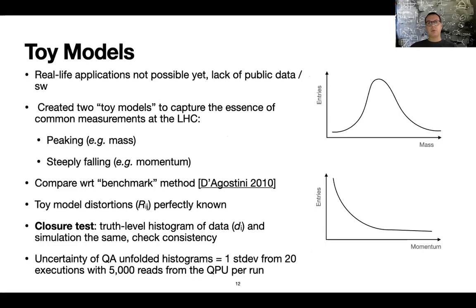So we created two toy models as we call them that capture the essence of a typical measurement that is carried out at the CERN LHC. So these two scenarios correspond to the measurement of the invariant mass of a particle decaying into two other particles. So basically you have a spectrum that is kind of Gaussian-like and the other one is a steeply falling distribution that is, for example, a representation of the momentum distribution of particles that are produced by interactions. Also, we wanted to compare our results to a benchmark, and in this case we decided to use the iterative Bayesian unfolding developed by Giulio D'Agostini, that is a well-known method.